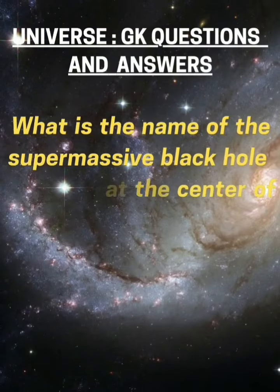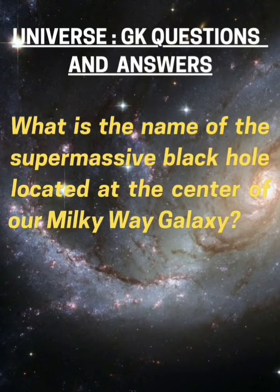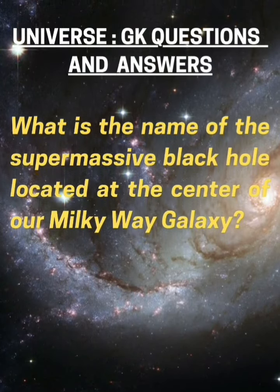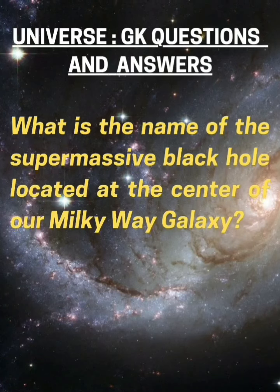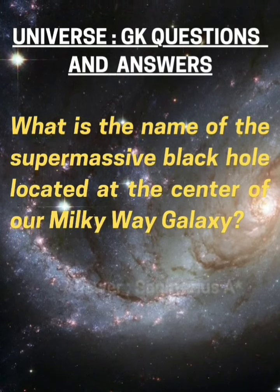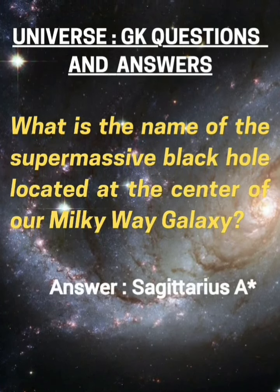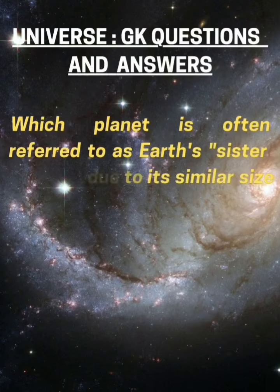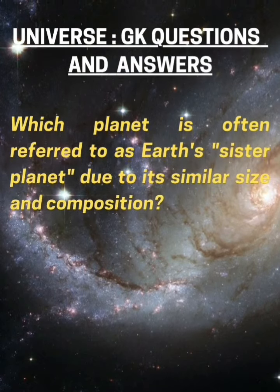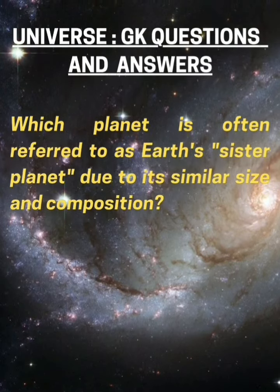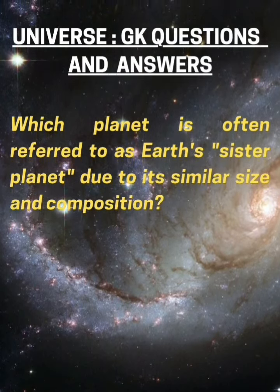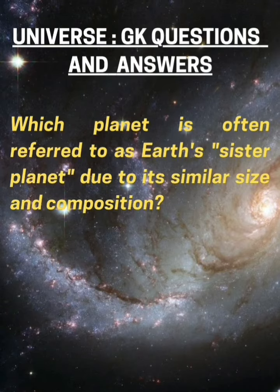What is the name of the supermassive black hole located at the center of our Milky Way galaxy? Answer: Sagittarius A. Which planet is often referred to as Earth's sister planet due to its similar size and composition? Answer: Venus.